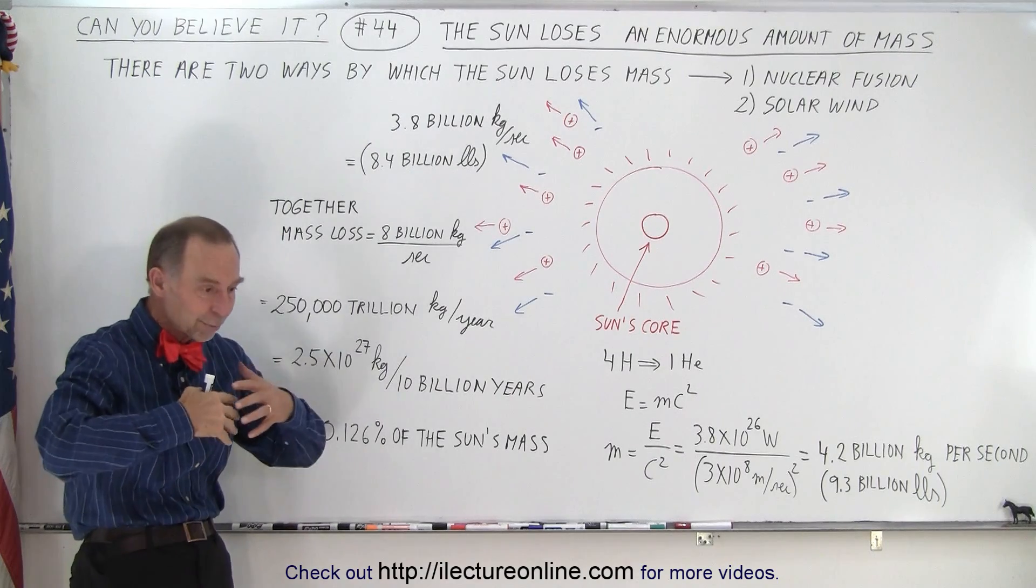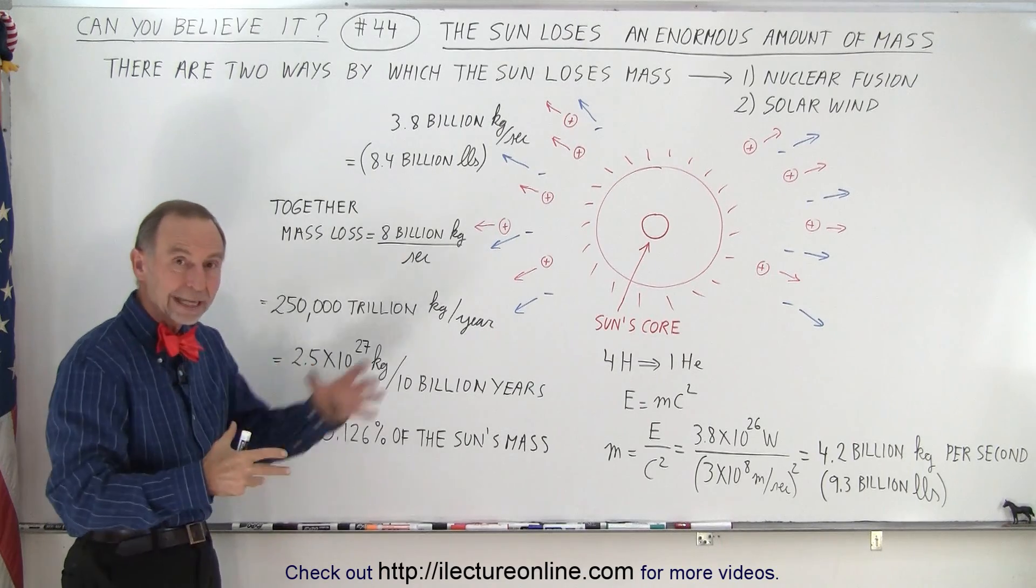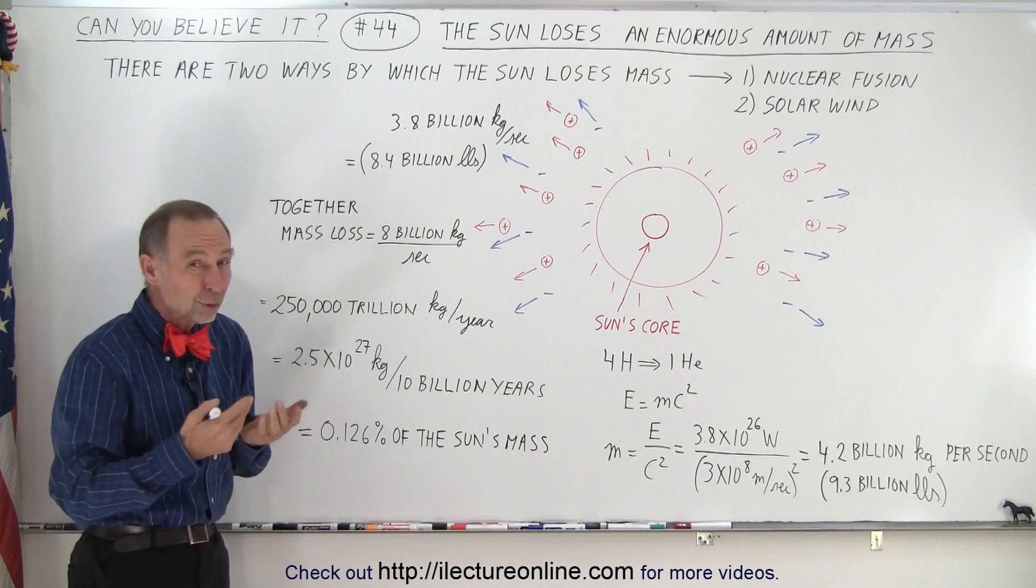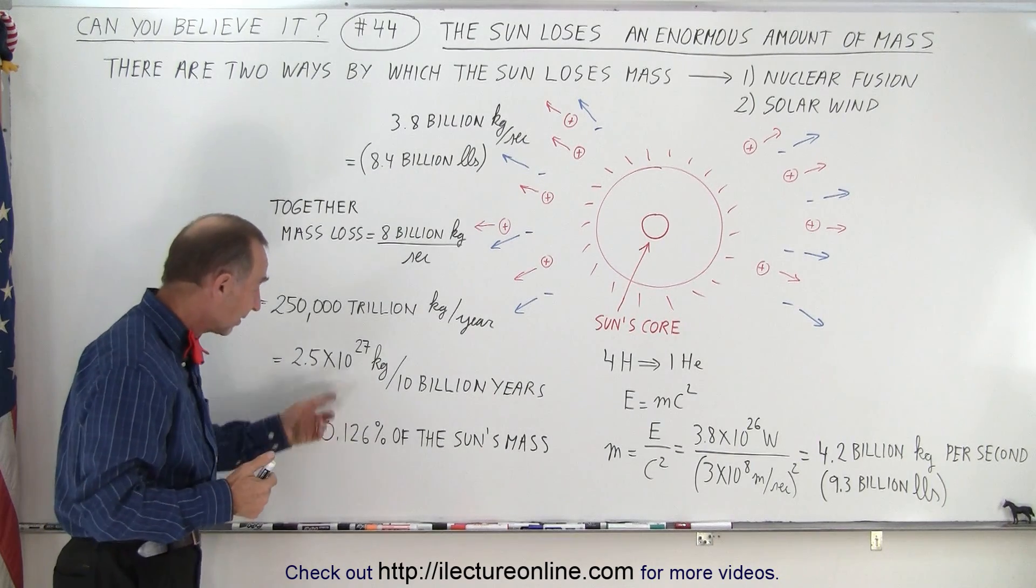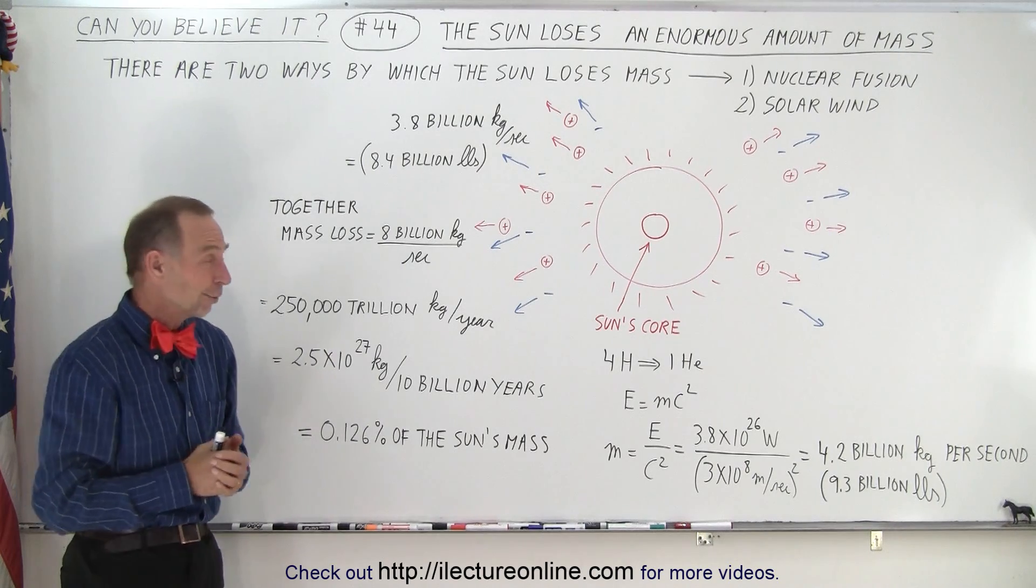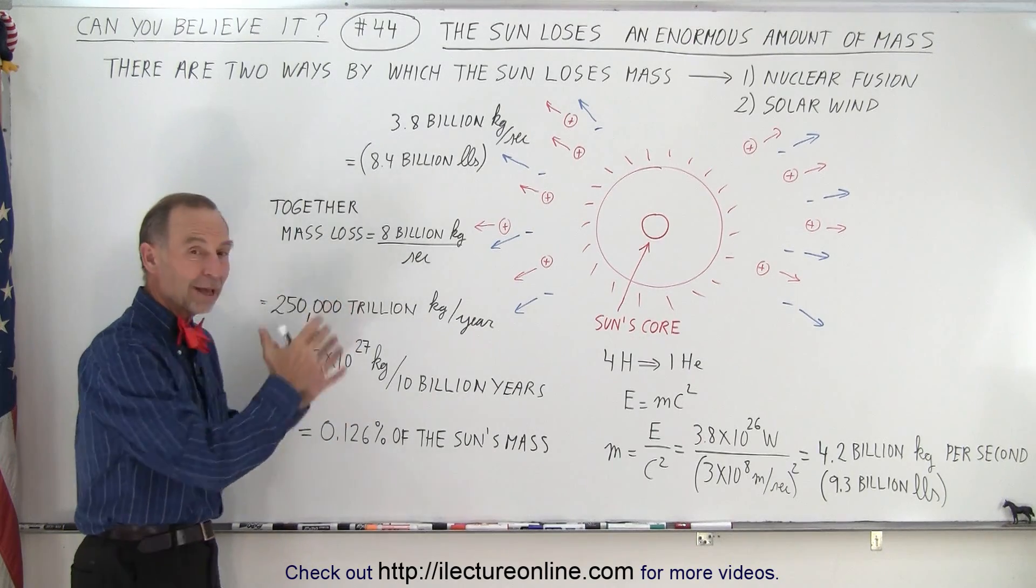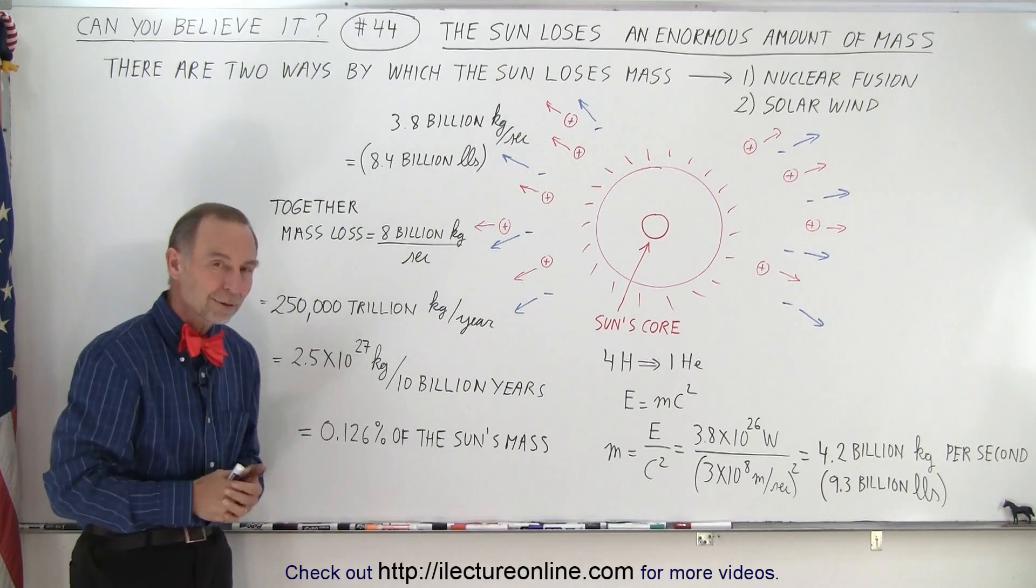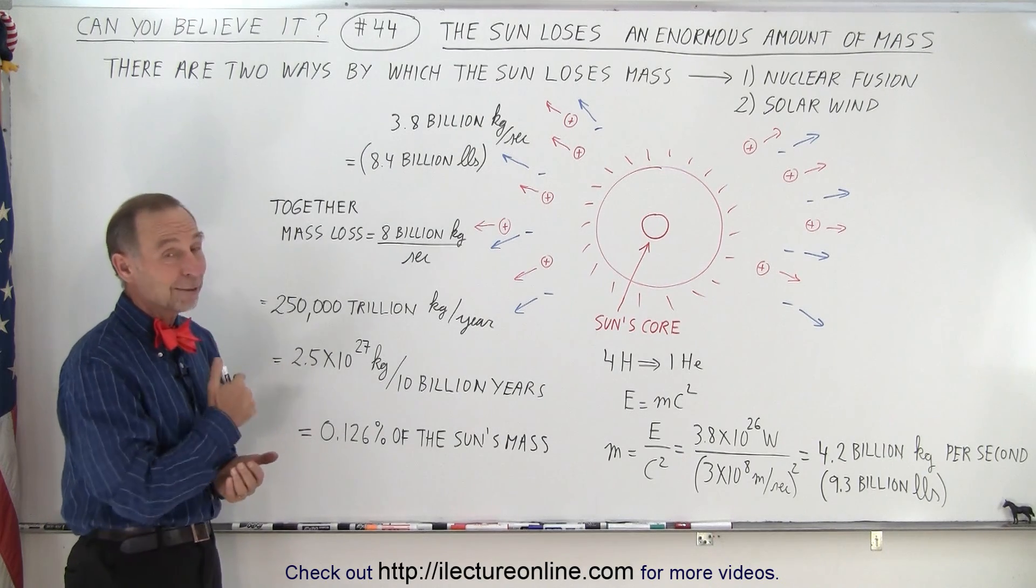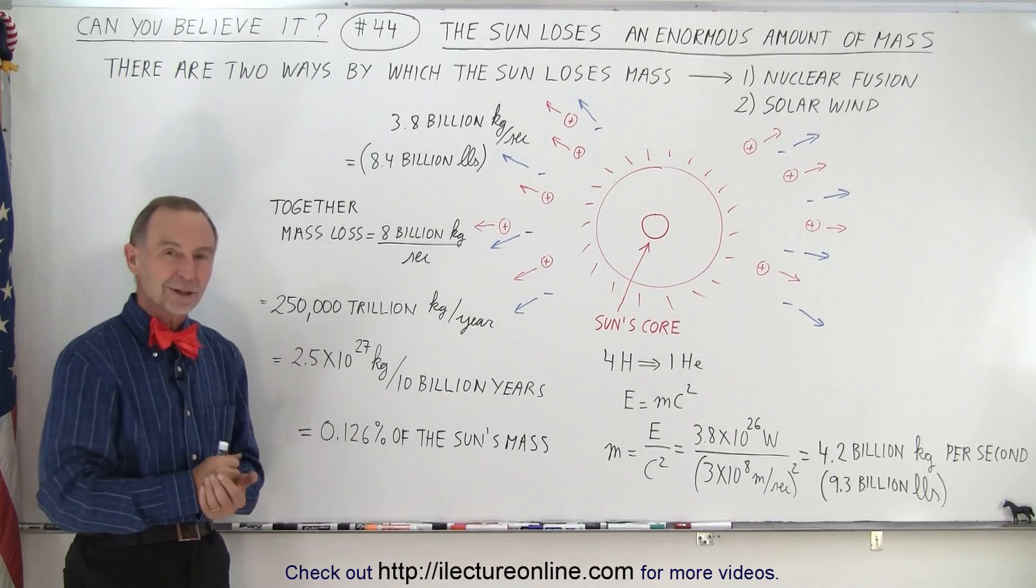500 earths worth of mass being sent out by the sun through the solar wind and being converted from matter to energy in the nuclear fusion process. But it turns out since the sun is about 2 times 10 to the 30 kilograms in mass, this only makes up a little over one-tenth of one percent of the total solar mass, and so therefore we don't need to worry about it. The sun has plenty of mass, plenty of matter, to make this process happen for 10 billion years. It's a lot of mass, but the sun being that big, it's really not that much of a chunk of the sun.